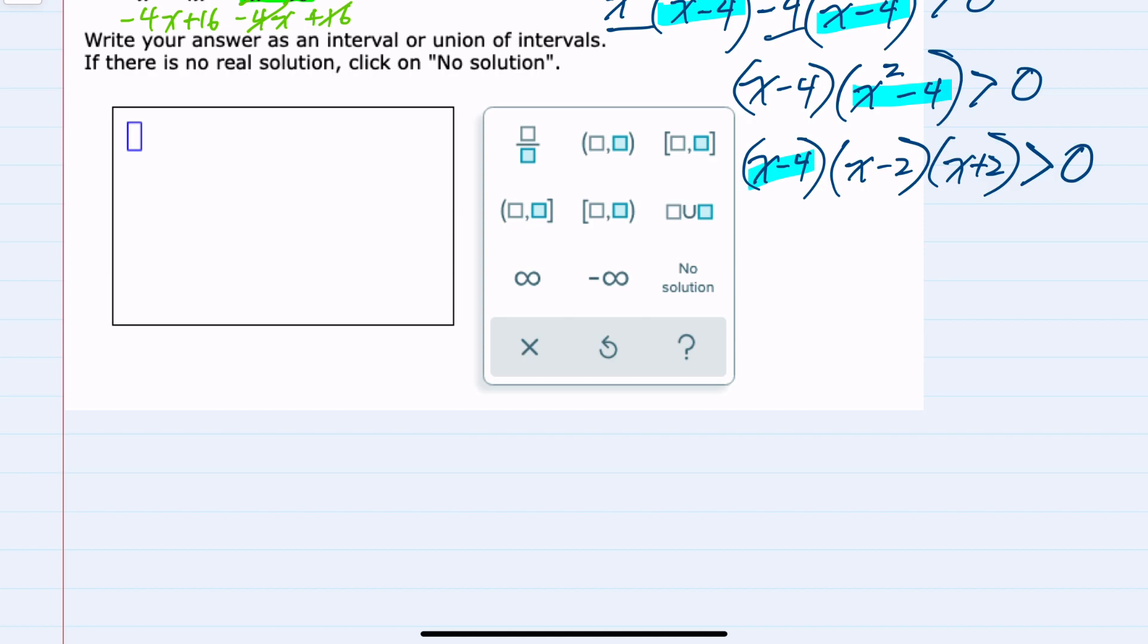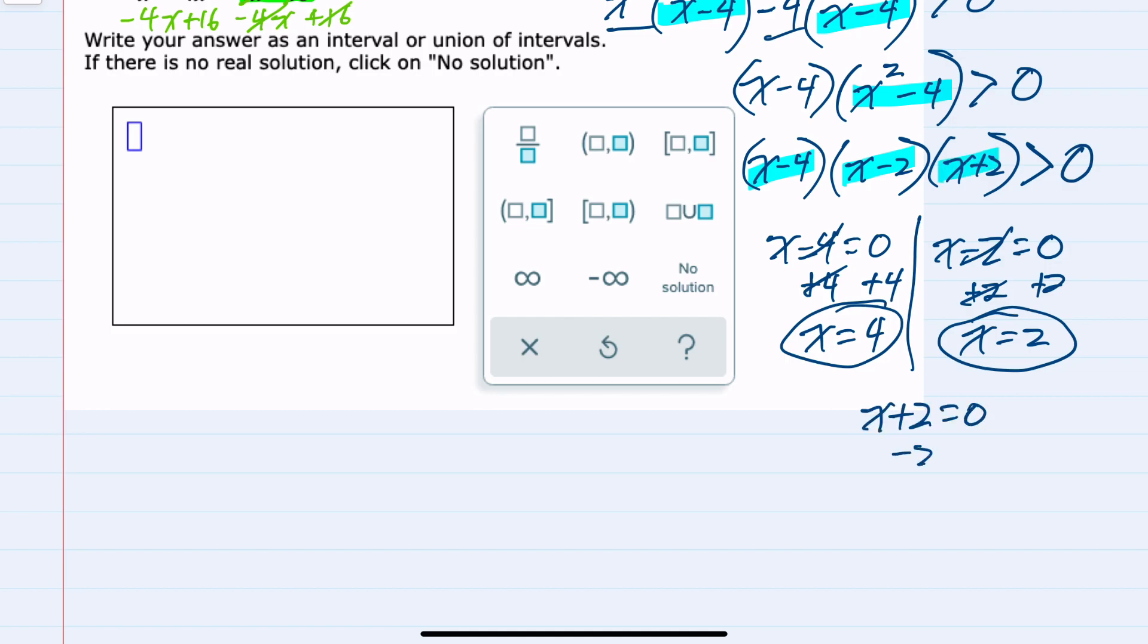For the first factor, setting it equal to 0 and solving for x gives me an x equals 4. For the second factor, x minus 2, setting it equal to 0 and solving for x gives me an x equals 2. The third factor is x plus 2, setting it equal to 0 and solving for x gives me x equals negative 2.